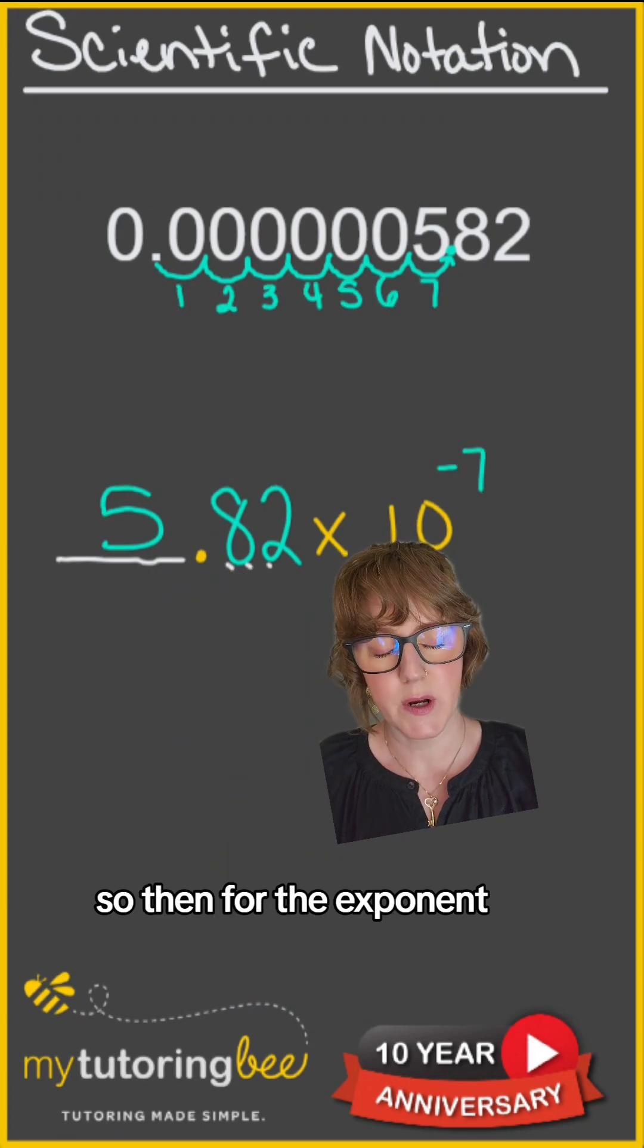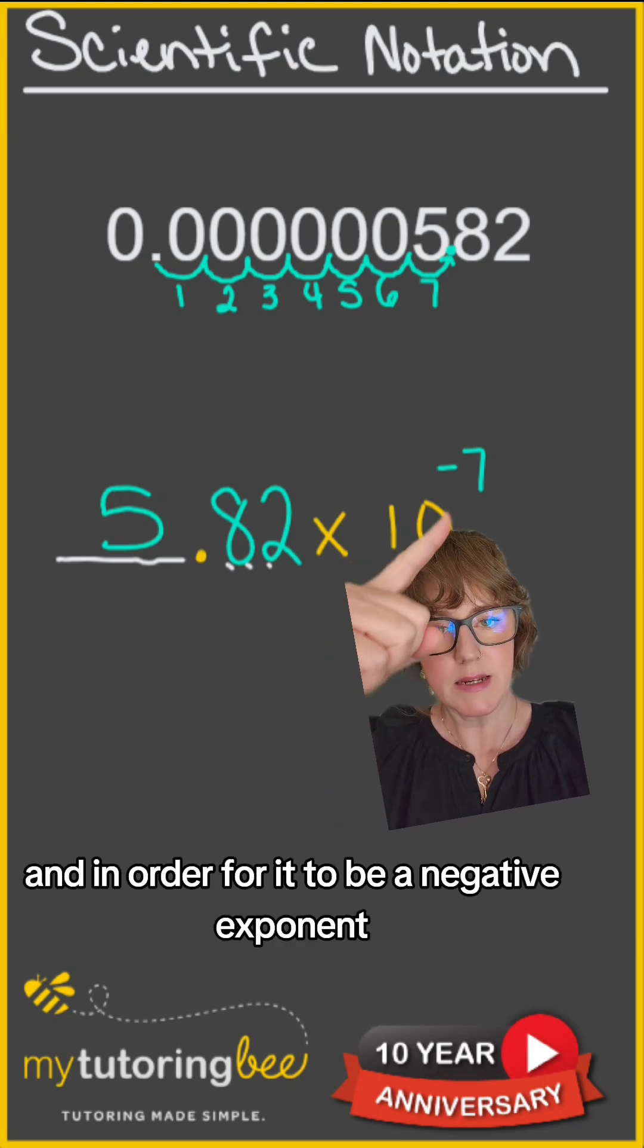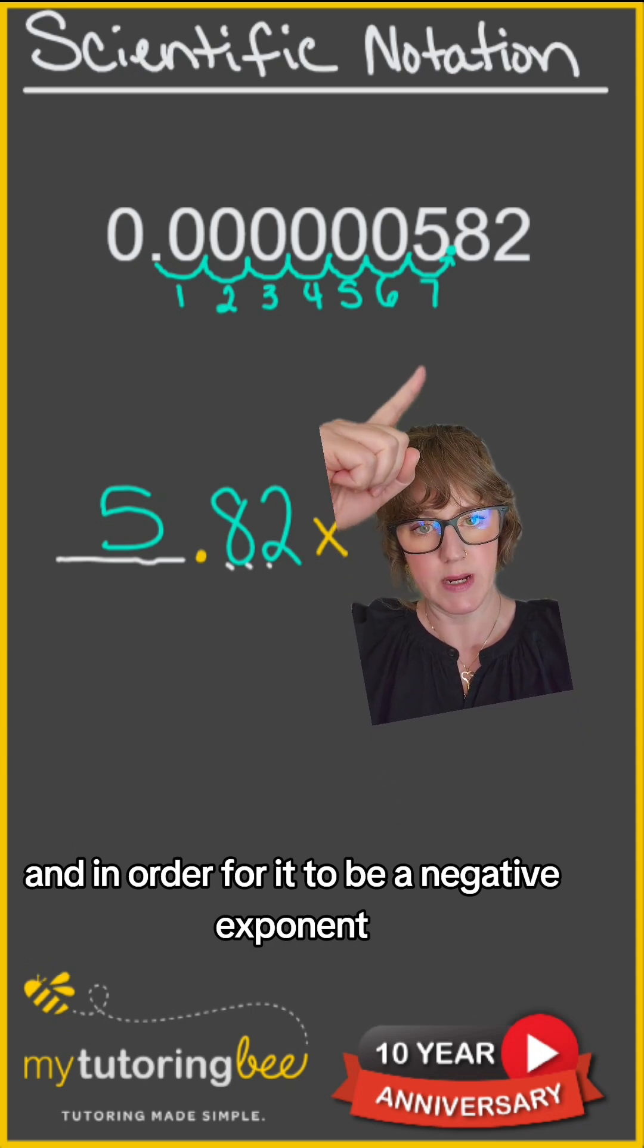So then for the exponent, we simply count how many times we needed to move that decimal. And in order for it to be a negative exponent,